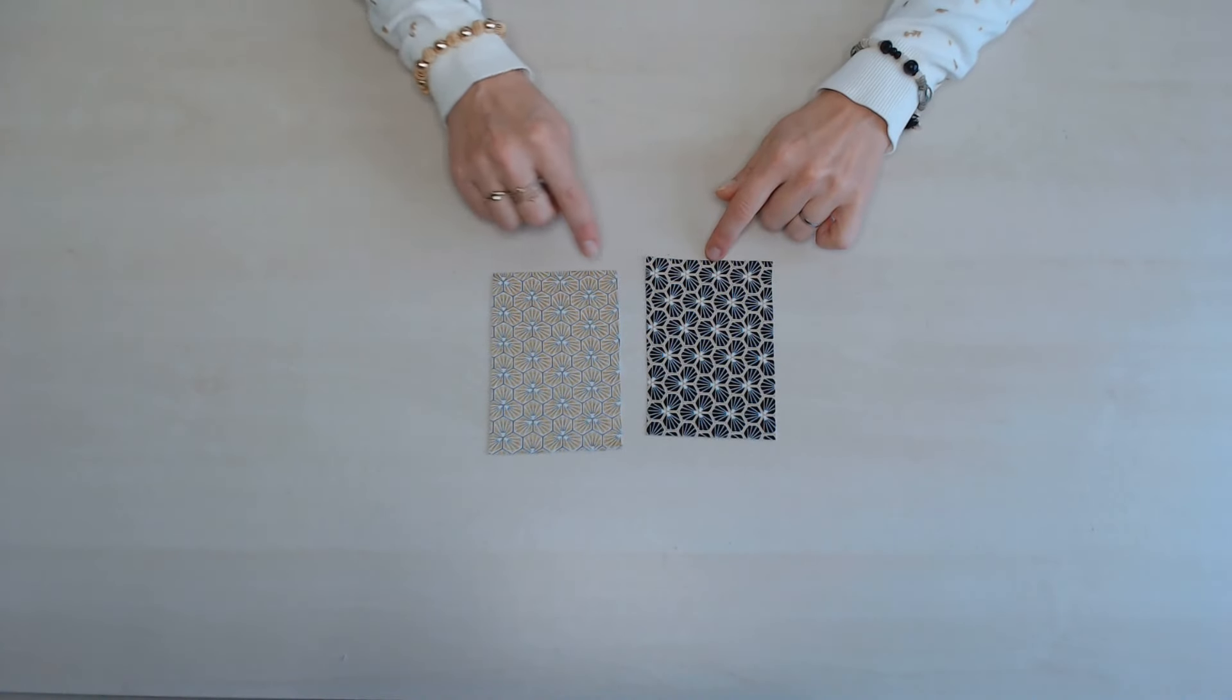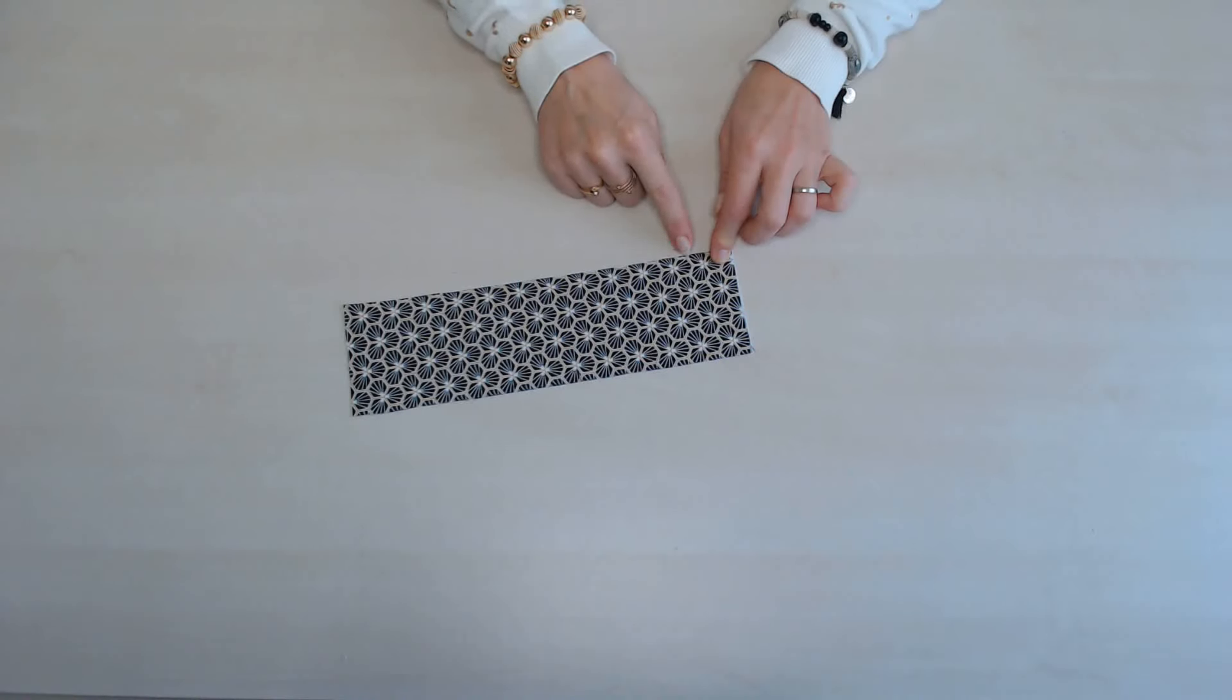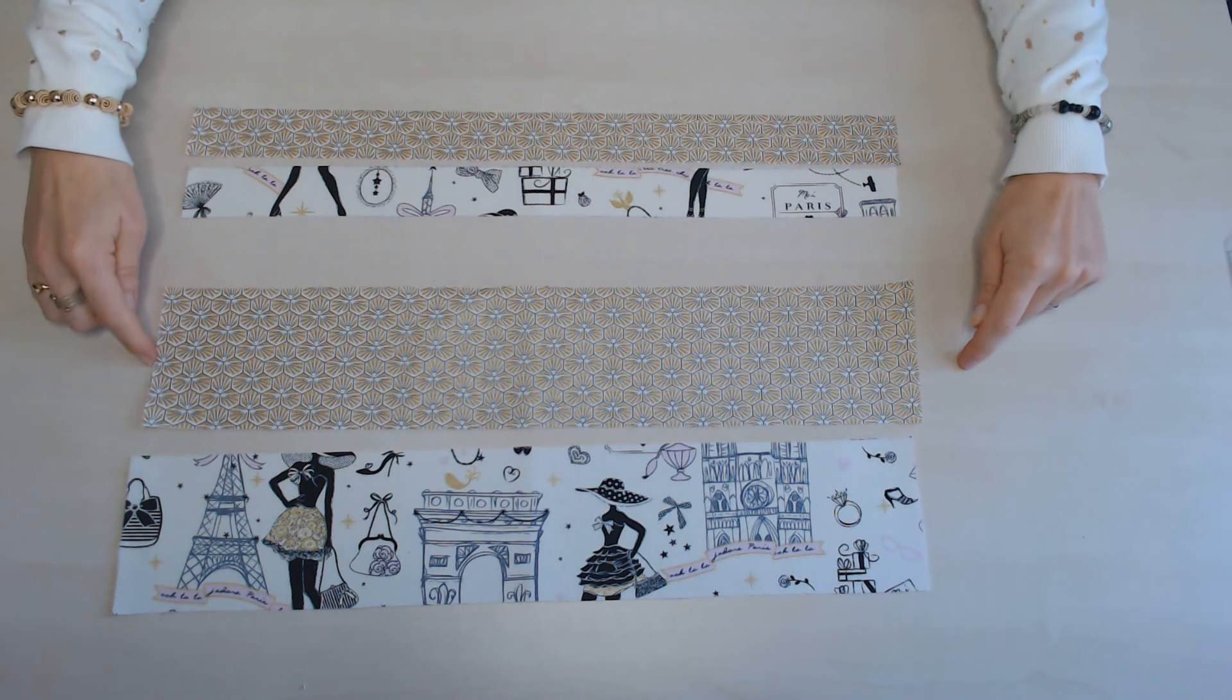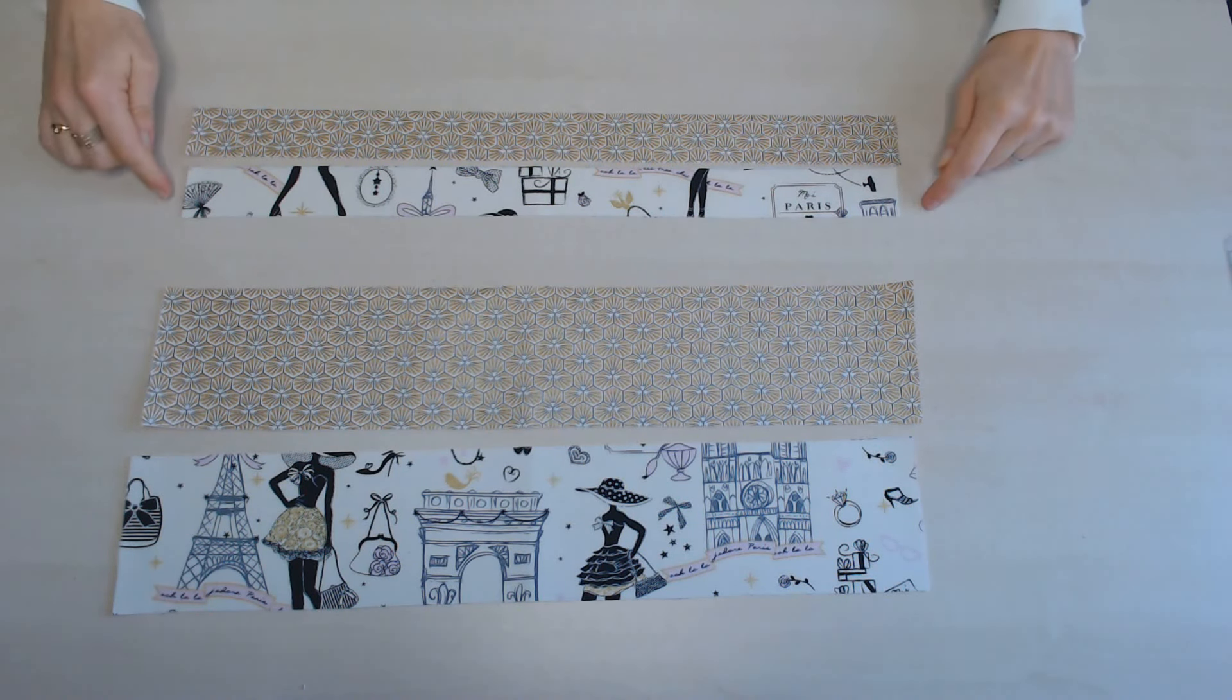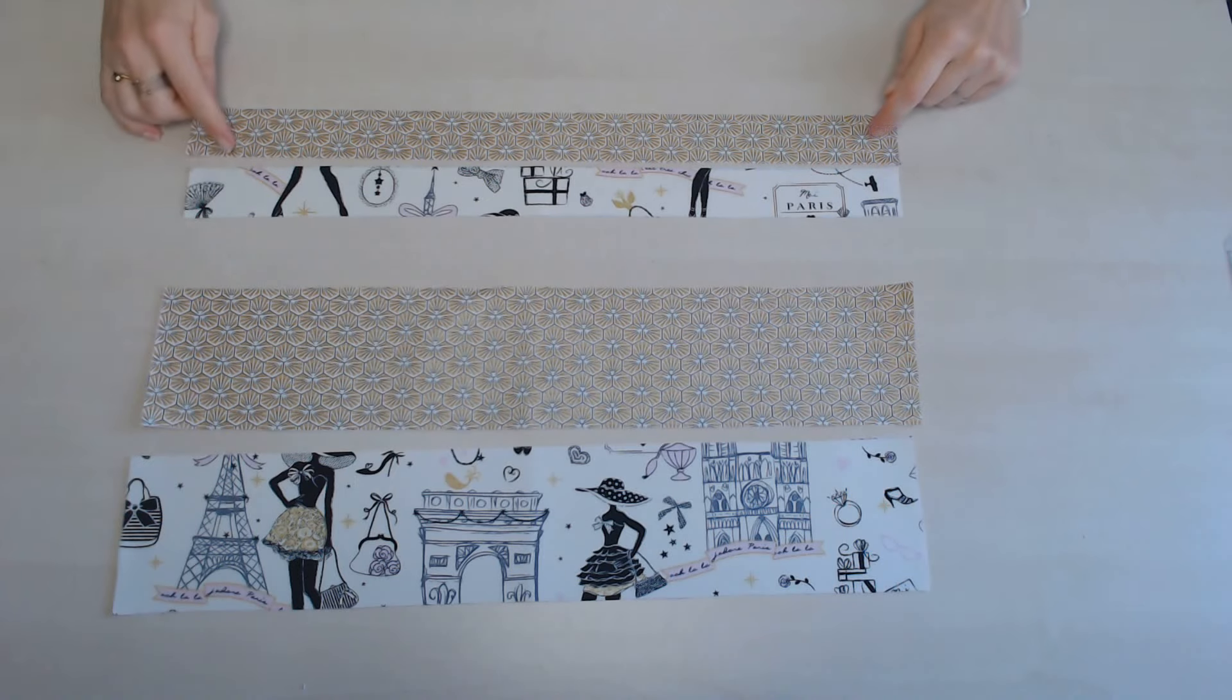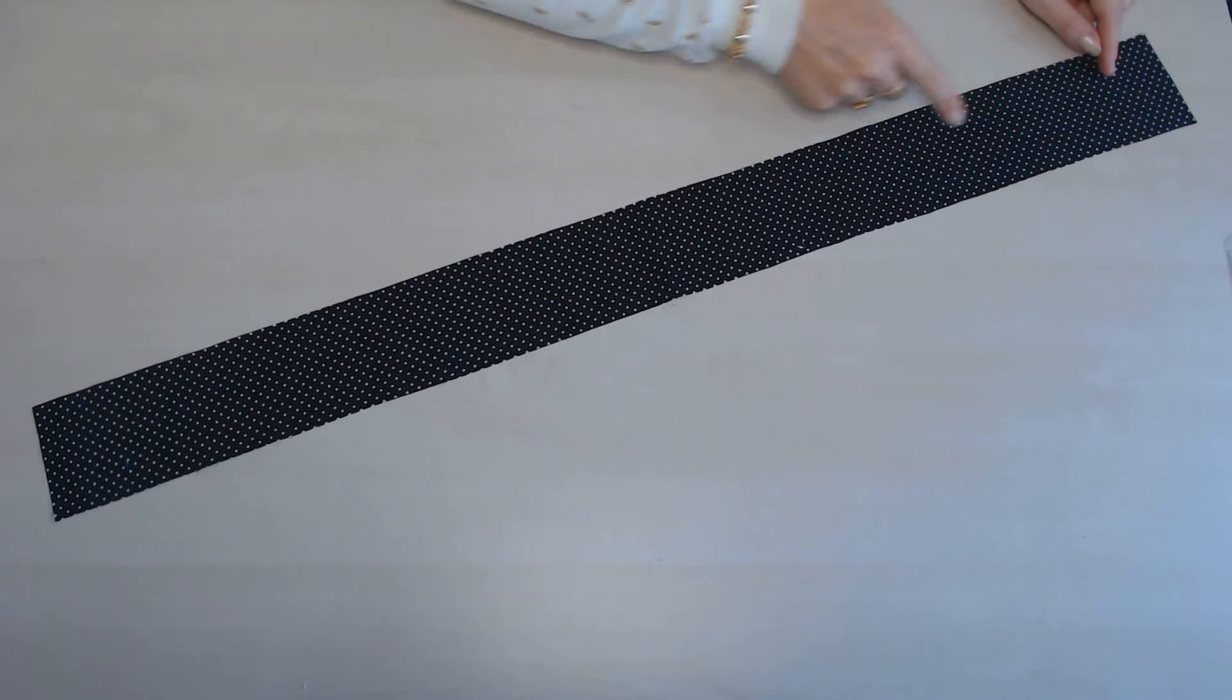Deux morceaux de 9 cm sur 13, une bande de 28 cm sur 8, une fermeture à glissière de 45 cm et quatre petits morceaux de 3 cm sur 6, deux bandes de 52 cm sur 10 et deux bandes de 52 cm sur 4, deux dans le tissu extérieur et deux dans le tissu intérieur, une bande de 86 cm sur 8.